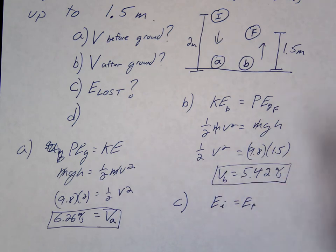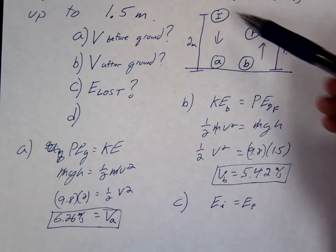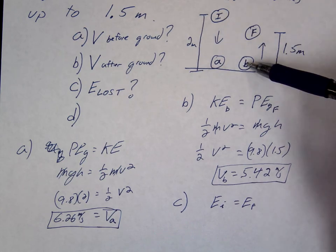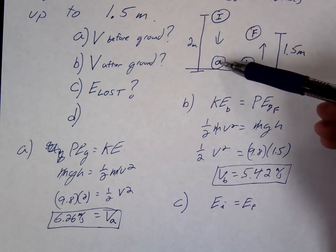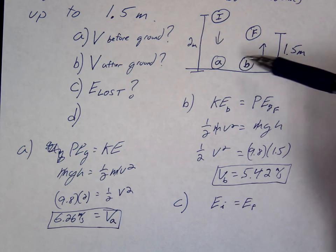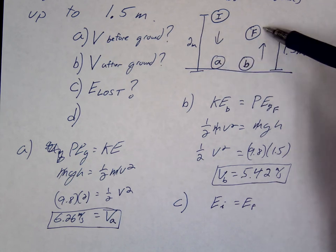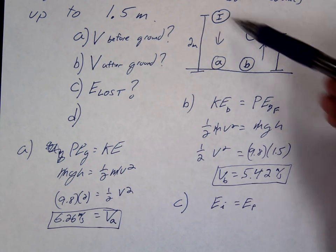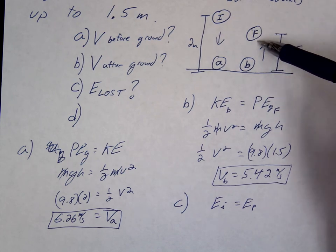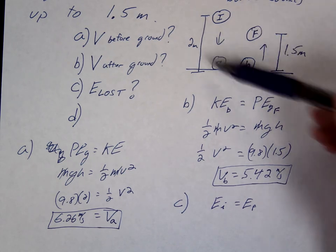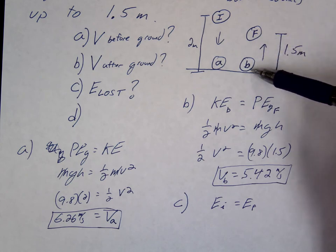So we are going to do E initial equals E final. The question is, what's our initial, what's our final? Well, you can make the initial here and the final here, so between I and B. You can make it between A and B. You can make it between A and F. Or you can make it between I and F.